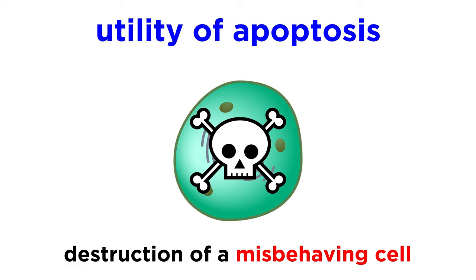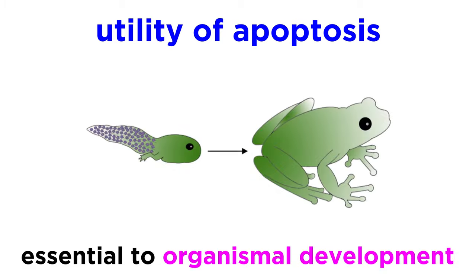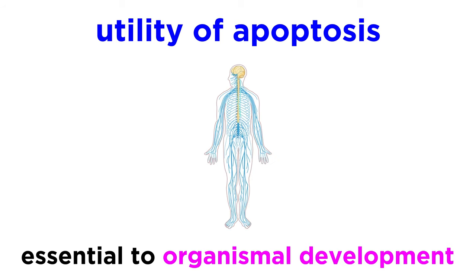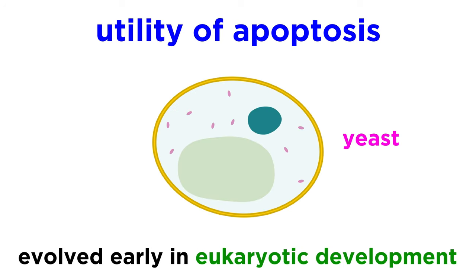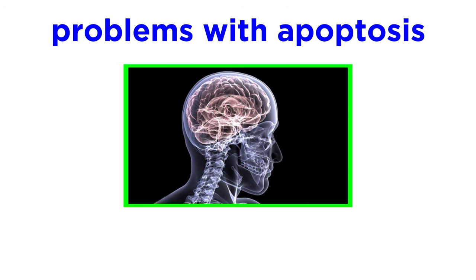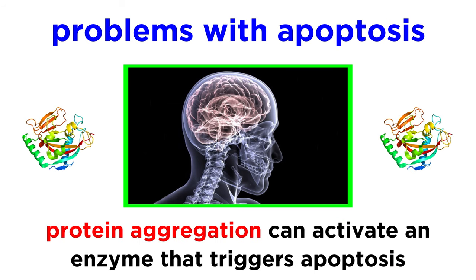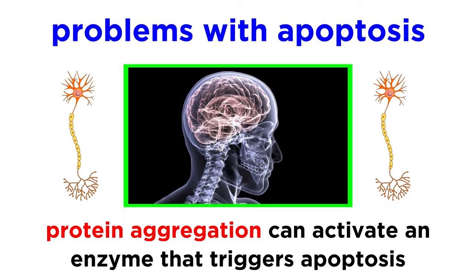While apoptosis is sometimes a last resort for a misbehaving cell, it is often an essential aspect of organismal development. This occurs to varying degrees with different vertebrates to produce hands, feet, paws, and other such limbs. It is required for normal development of the nervous system. And the fact that this process occurs in most eukaryotic life, even single-celled yeasts, demonstrates that this basic mechanism evolved very early in eukaryotic development. Problems with this mechanism lead to a variety of degenerative diseases, such as Alzheimer's disease and Parkinson's disease. Protein aggregation can activate an enzyme that triggers apoptosis, resulting in the death of neurons and loss of brain function.